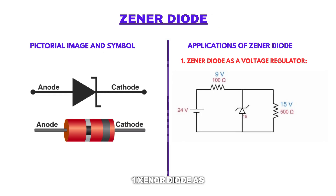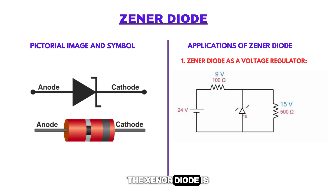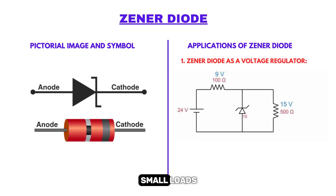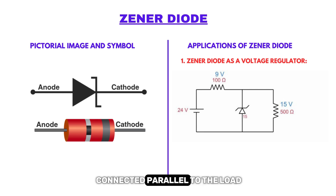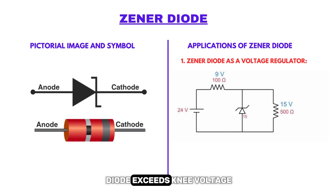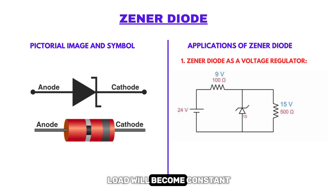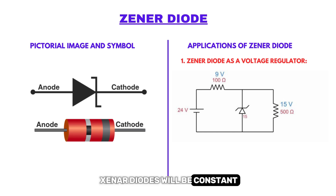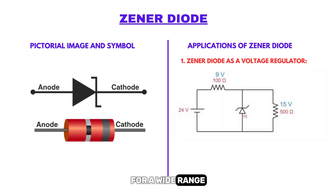Zener diode as a voltage regulator: the Zener diode is used as a shunt voltage regulator for regulating voltage across small loads. The Zener diode is connected in parallel to the load to make it reverse biased, and once the Zener diode exceeds knee voltage, the voltage across the load will become constant. The breakdown voltage of Zener diodes will be constant for a wide range of currents.